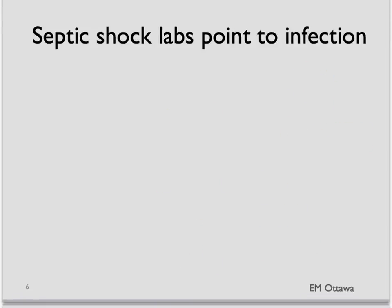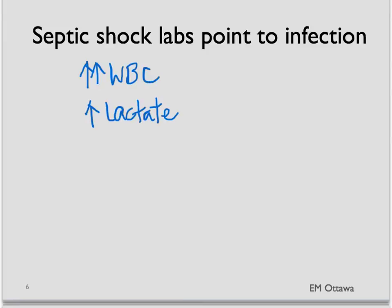What about labs? On top of what a shock patient might get, septic shock patients might also have a much higher white blood cell count and increased lactate. In terms of other labs, we also want to look for the source of infection. That might mean urine and blood cultures, chest x-ray for pneumonia, or even lumbar puncture for suspected meningitis or encephalitis.